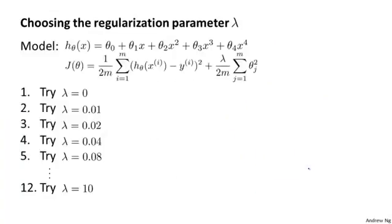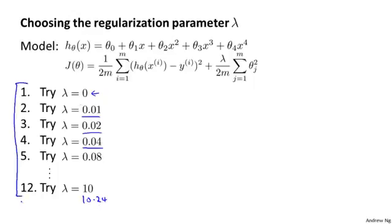This is how we can automatically choose the regularization parameter lambda. What I usually do is have some range of values of lambda to try out. I might consider lambda equals 0.01, 0.02, 0.04, and so on, stepping these up in multiples of two until some larger value. If I were doing this in multiples of two, I'd actually end up with 10.24 instead of exactly 10 — the third and fourth decimal places won't affect your result that much. This gives me maybe 12 different models corresponding to 12 different values of the regularization parameter lambda.